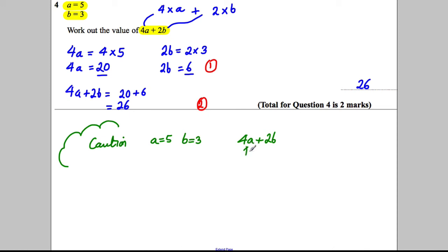They forget that 4A means 4 multiplied by A. They think it's 4 add A, and they say that 4 add 5, which is equal to 9. And for this one, they do 2 add 3, which is equal to 5. They add them together and they get the answer 14.